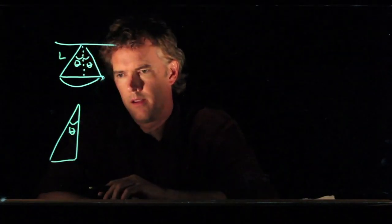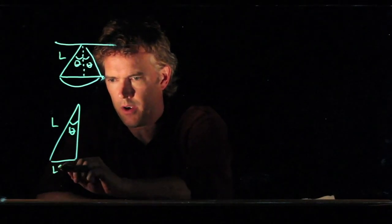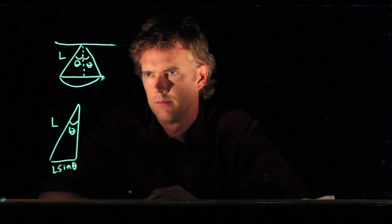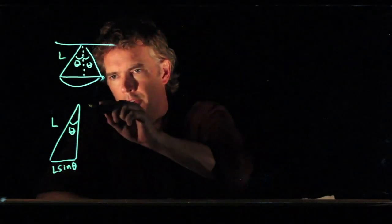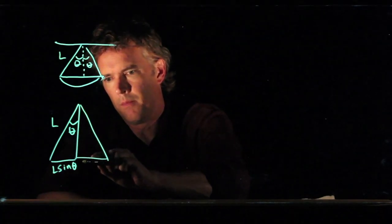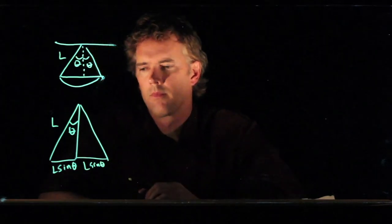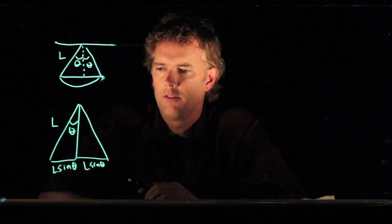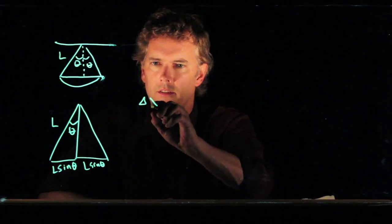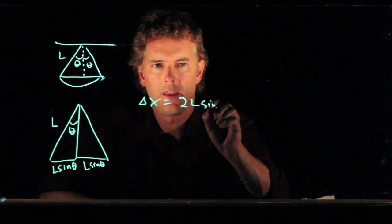If that's theta and this is L, then this side of the triangle is L sine theta. But there's another one over on the other side, and that one's also L sine theta. So the distance that you've gone — the horizontal distance — is just 2L sine theta.